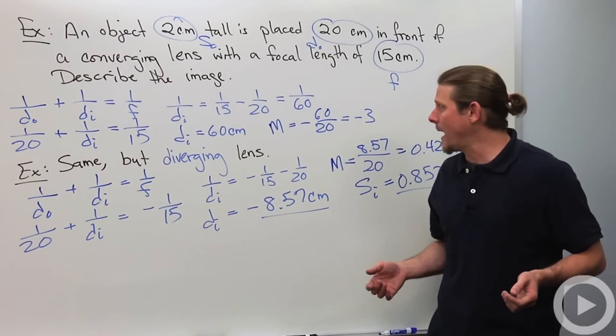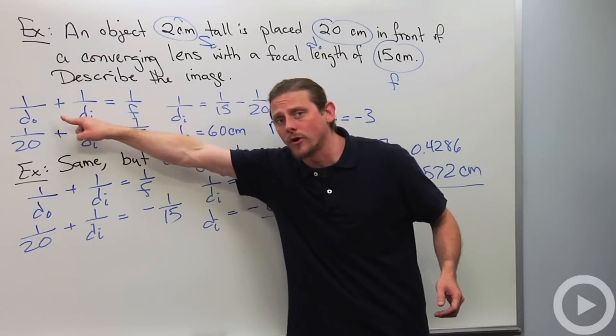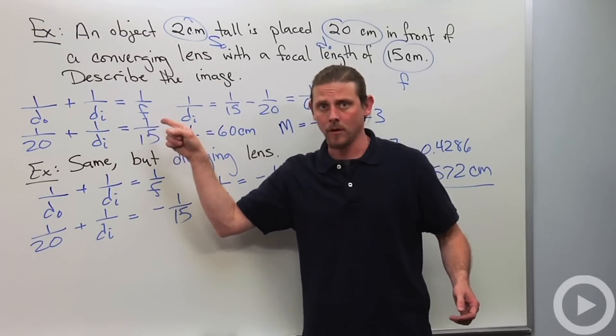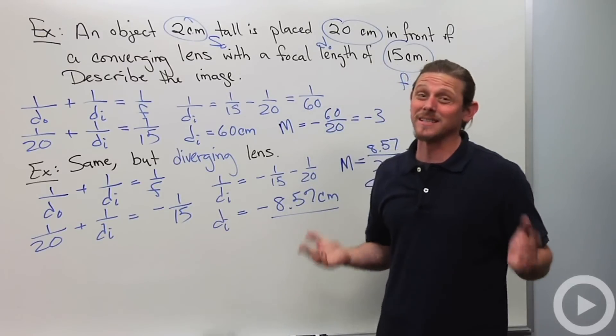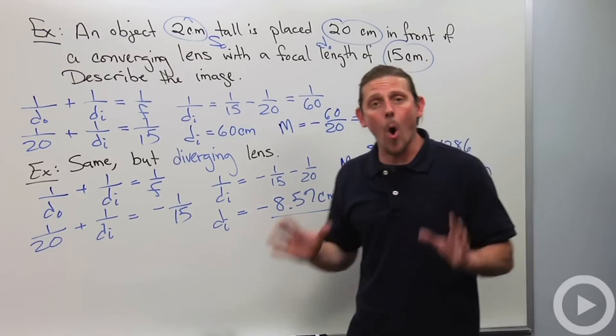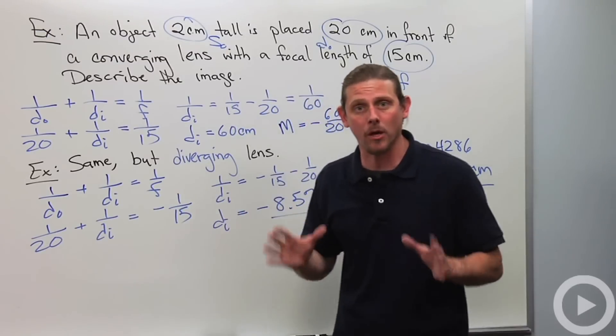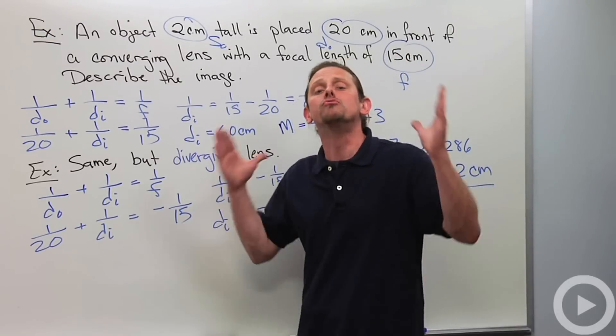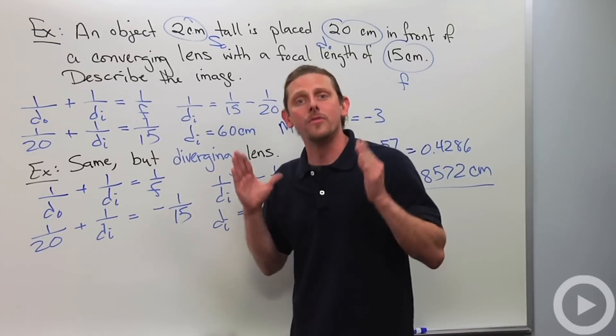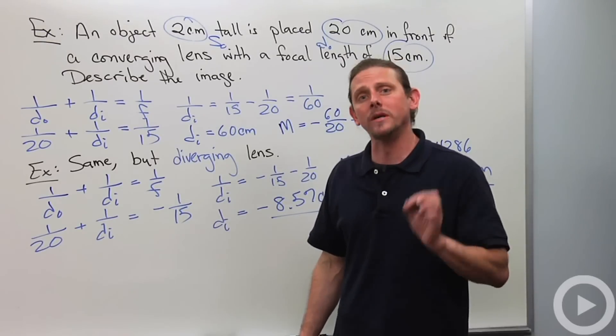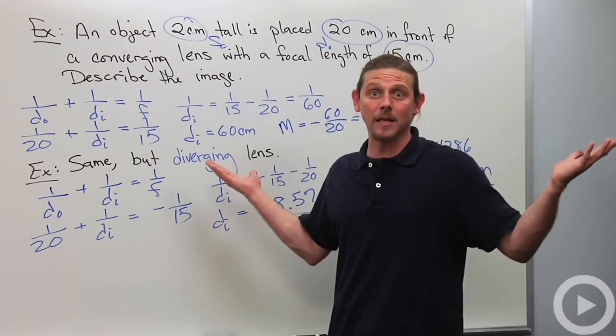And that's the lens equation. Most important thing to remember, it's 1 over DO plus 1 over DI equals 1 over F. That, and also, what does negative distance of the image represent? Remember that that always represents that the image appears on the wrong side. Whichever side you do not expect light to be on, that's the side that the image is on. It's always a virtual image when DI is negative. And that's the lens equation.